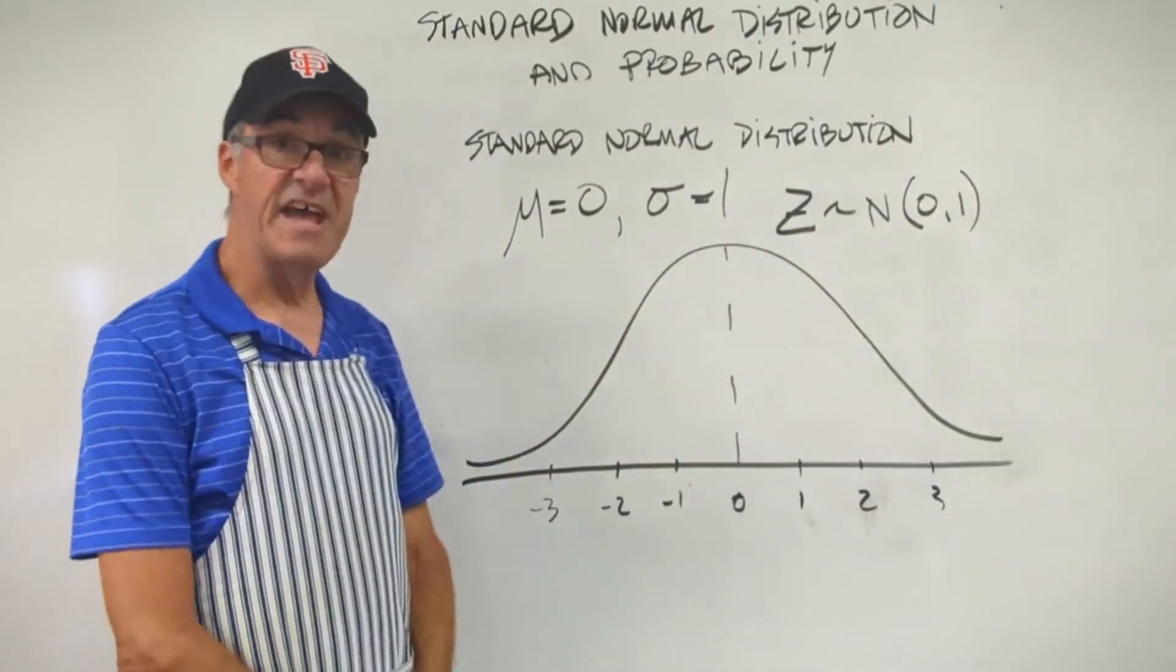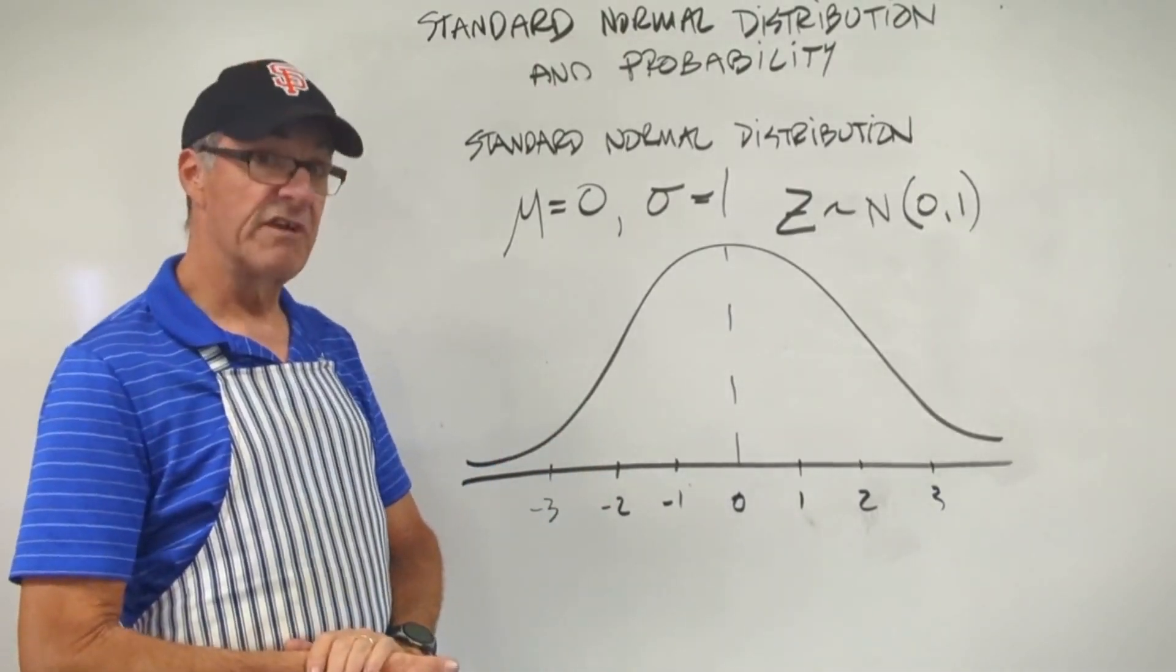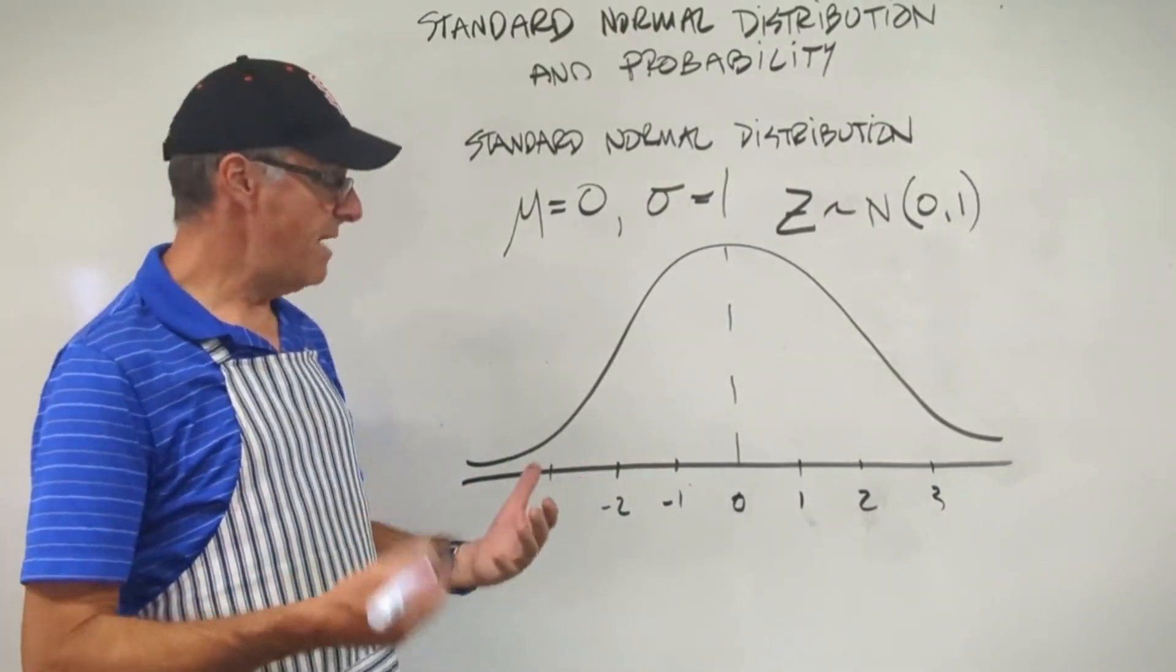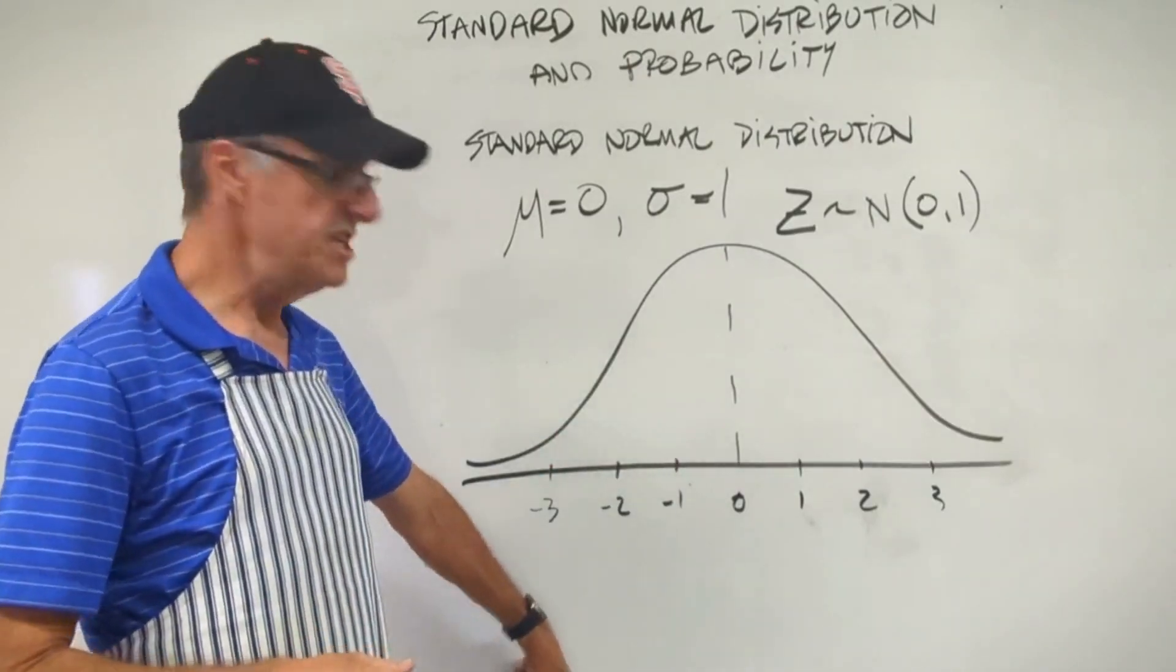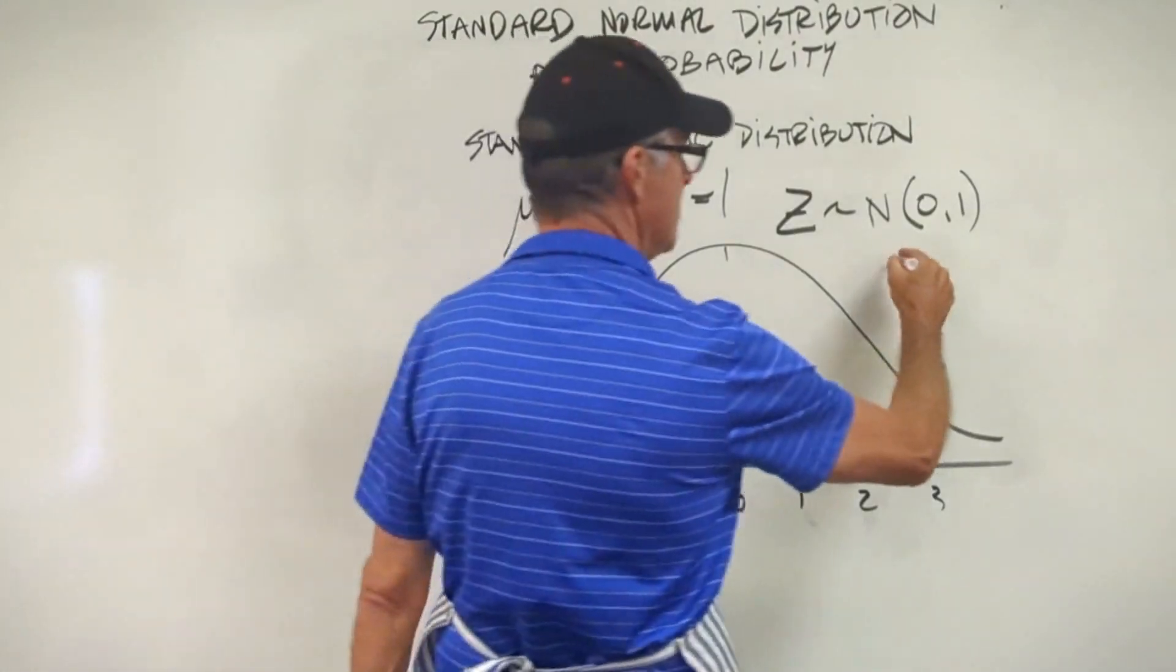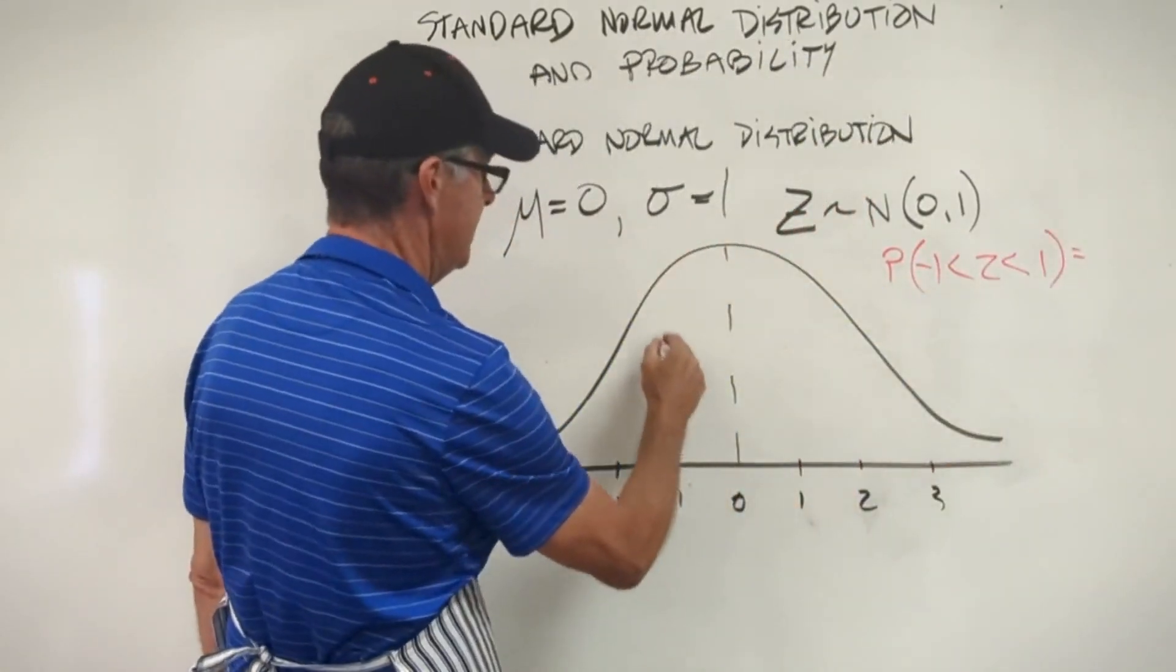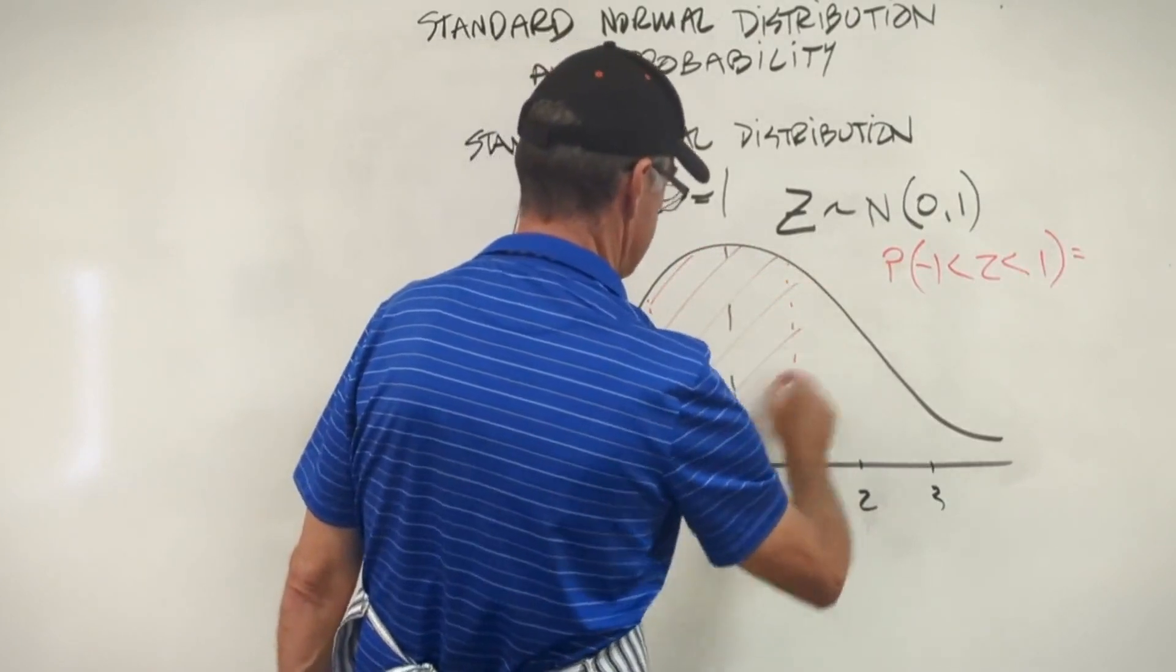So I've sketched that graph. Now let's talk about how we can use this to figure out probability. Okay? So let's say I have a question. I need to find out what is the probability that my result will be between negative one and one. And the interesting thing for that is it's just the area under the curve for that interval. So if I do probability of negative one less than Z less than positive one, that's going to be this area.